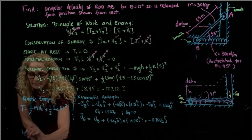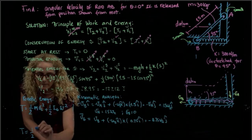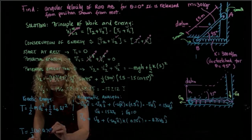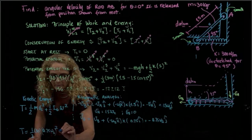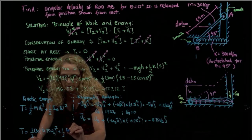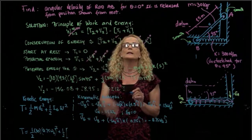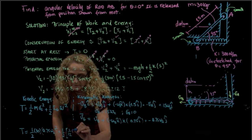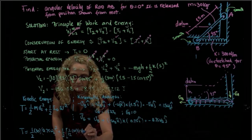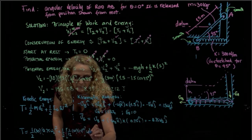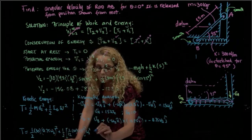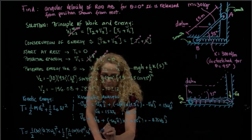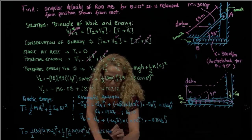Going back to the kinetic energy expression: one-half times 30 times (0.75 omega two) squared, plus one-half times the mass moment of inertia, which is (1/12) times mass times length squared, times omega two squared. Calculating that gives 11.25 omega two squared. That's the kinetic energy at position two.